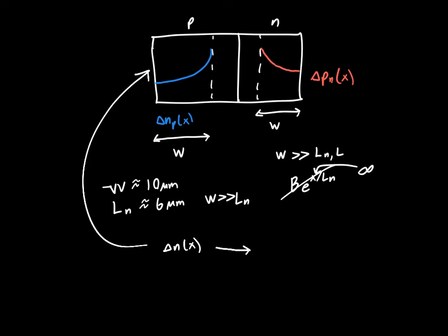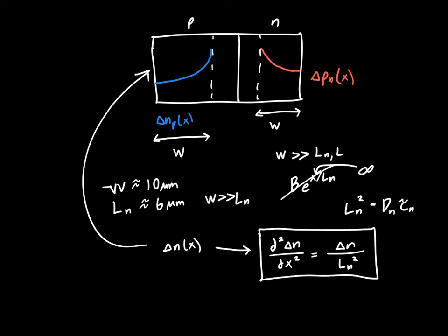That the second derivative of delta n was equal to delta n over Ln squared, where we said Ln was the diffusion length, and it's just equal to the diffusion length dn times the carrier lifetime tau n. So this was the differential equation that we came up with in our derivation of the pn junction current.